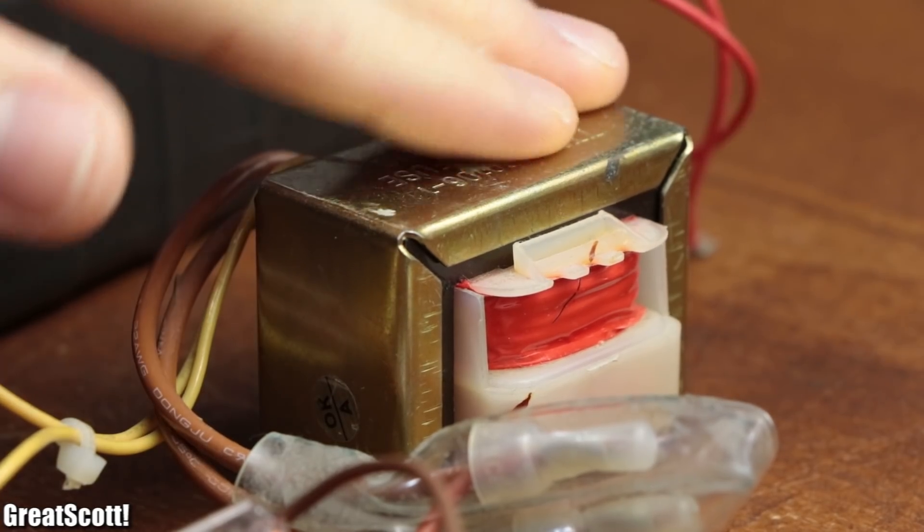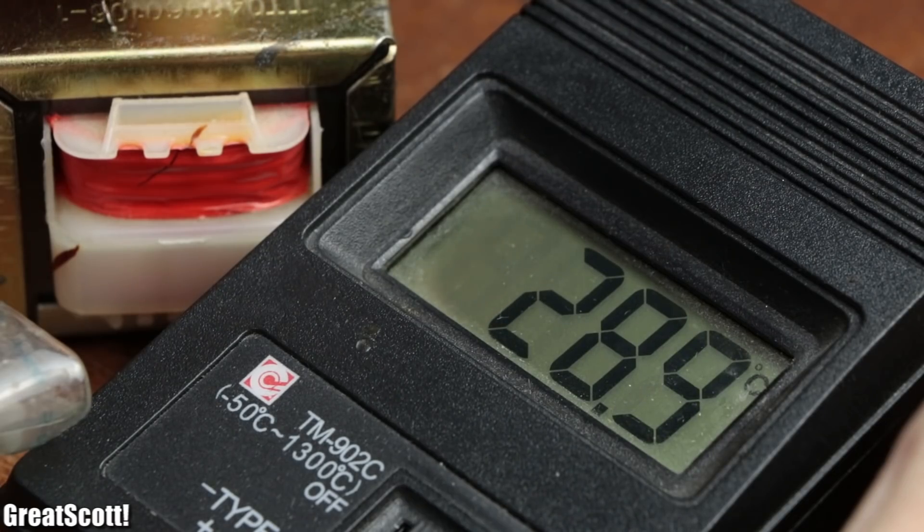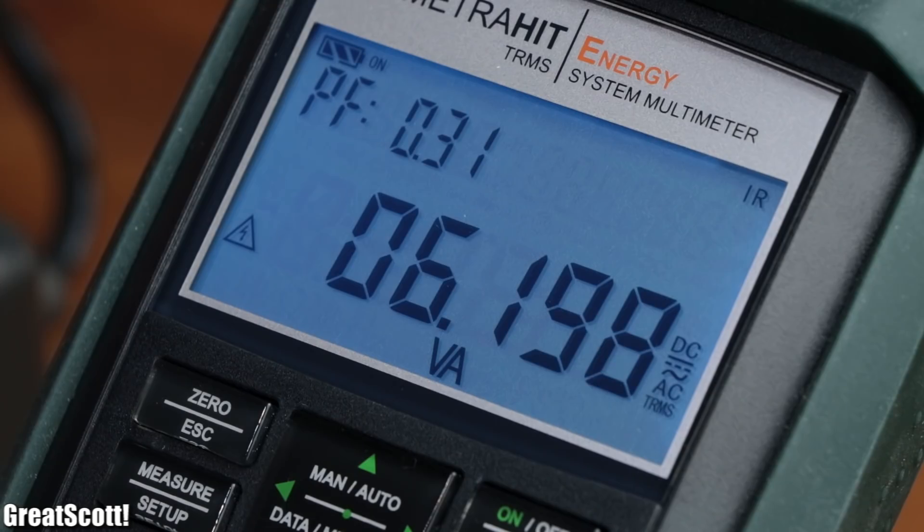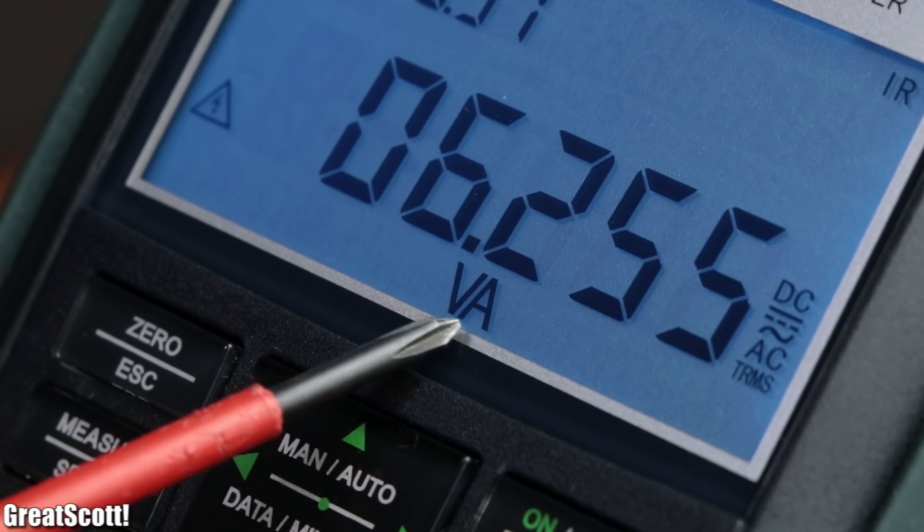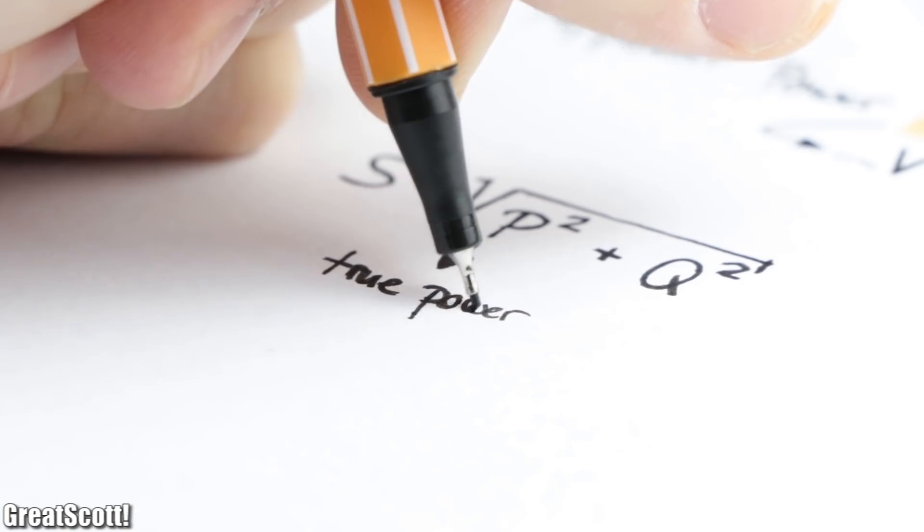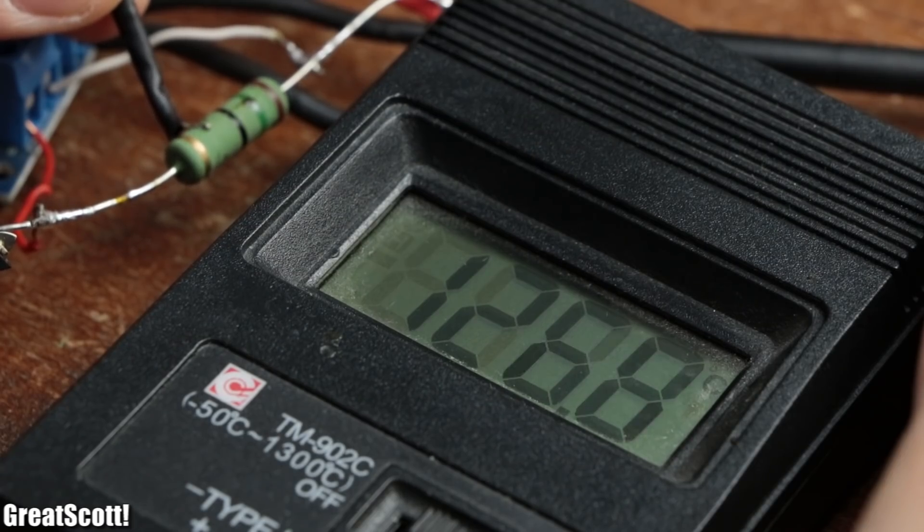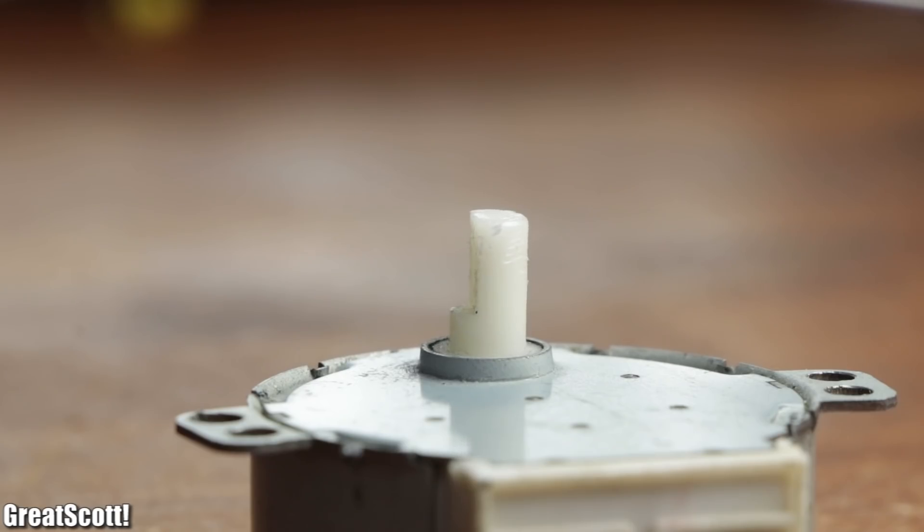But while I was touching the transformer I realized that it was not getting as hot as the power draw would let you suspect. The reason is that I measured the apparent power whose unit is volt-ampere, which is quite literally how you calculate it as well.